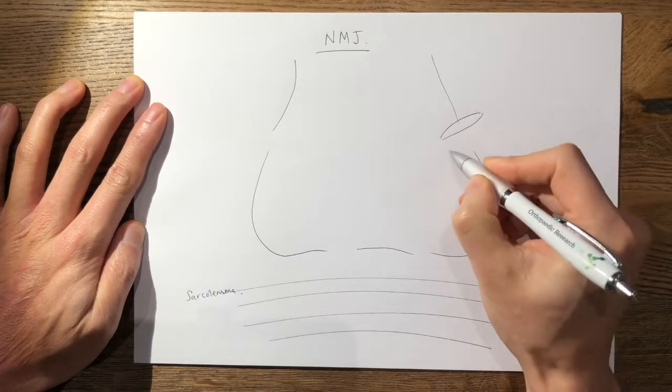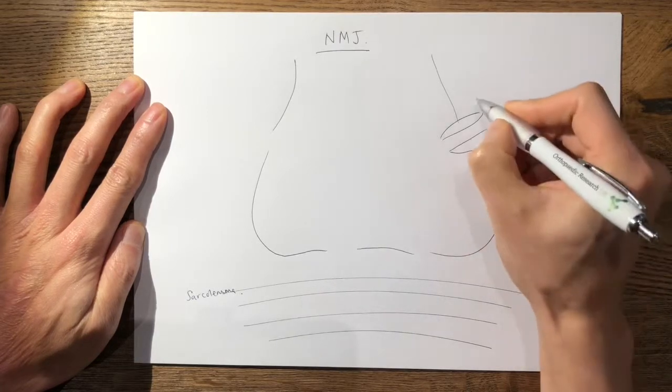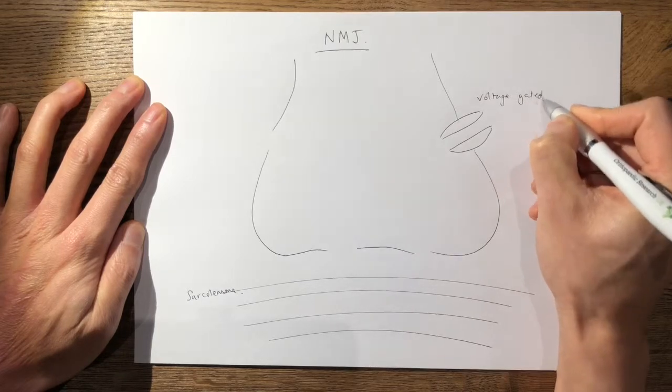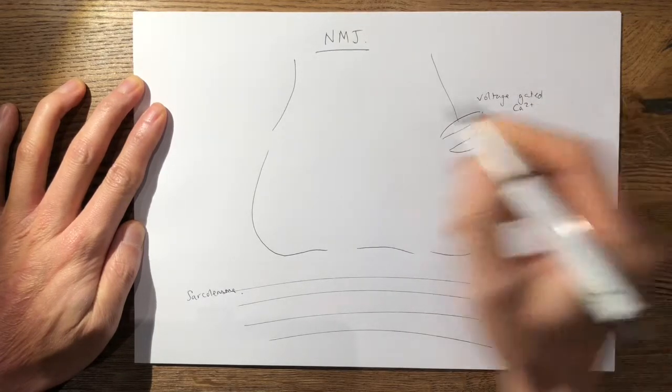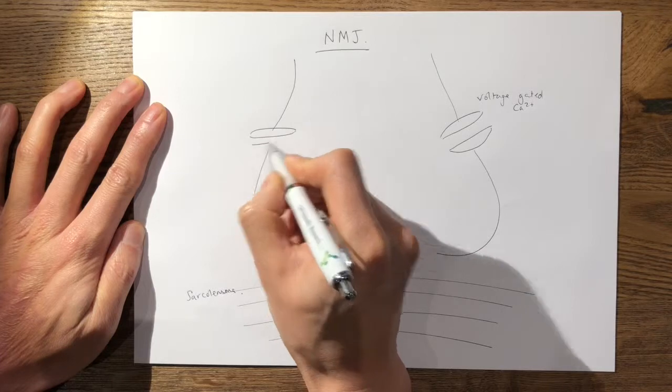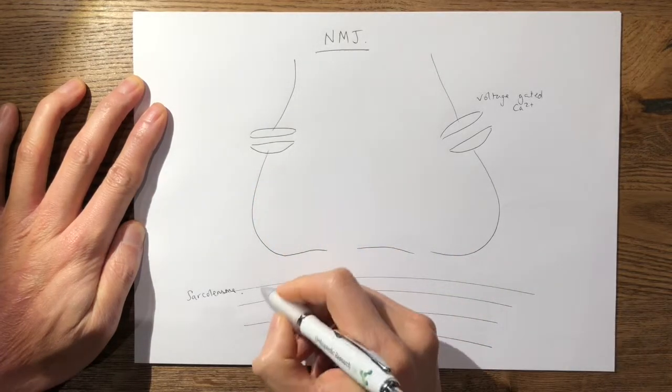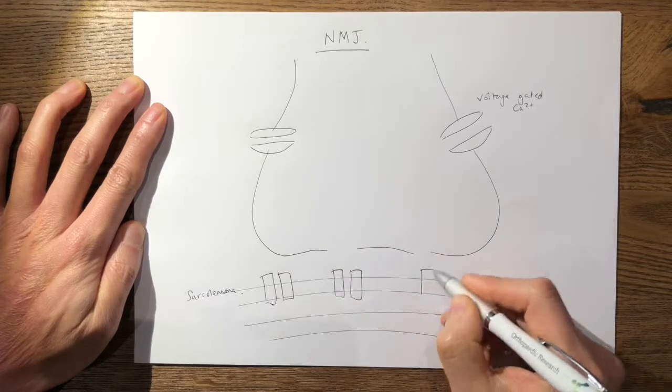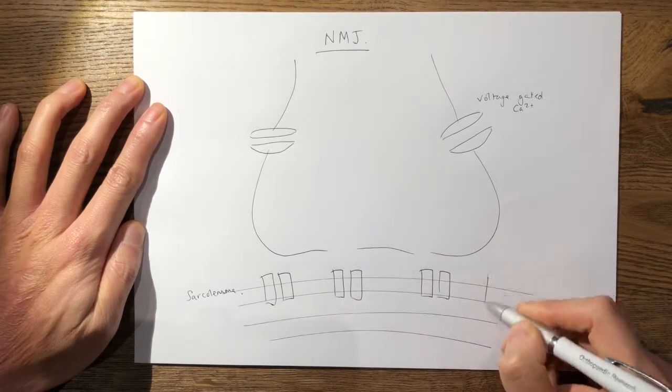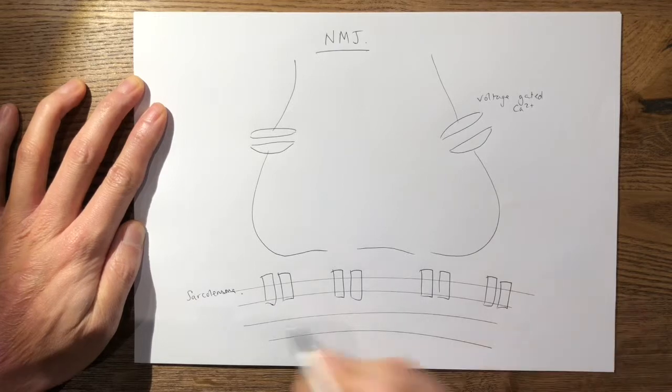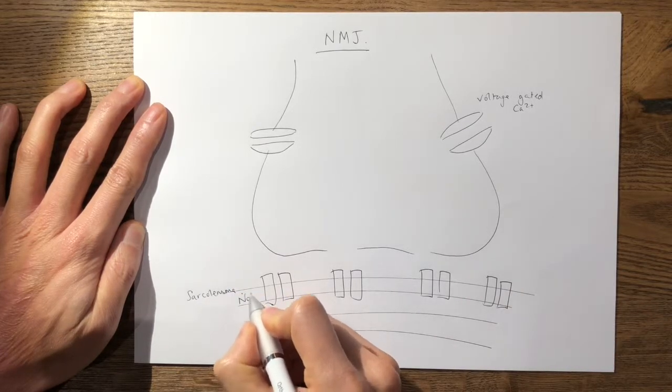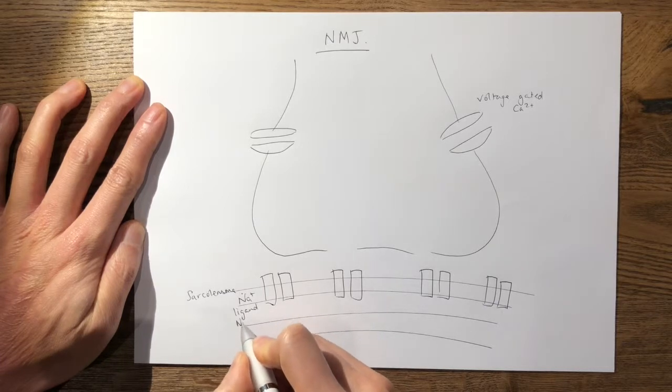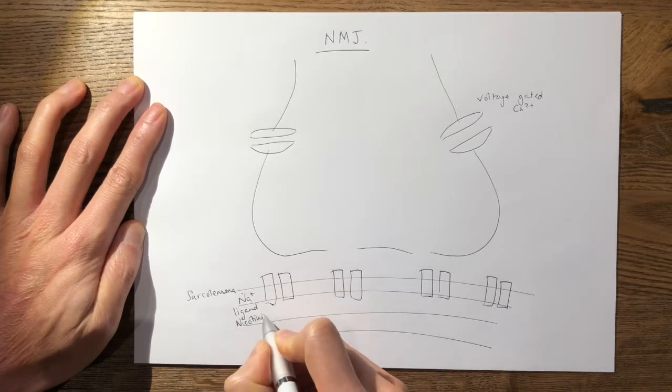First of all you have your voltage-gated calcium channels like so and then on your sarcolemma you have your sodium channels. Now these are ligand operated and these are known as your nicotinic sodium channels. So these are your sodium ligand-operated nicotinic receptors.